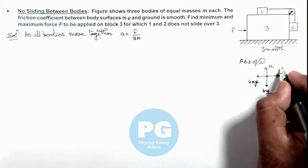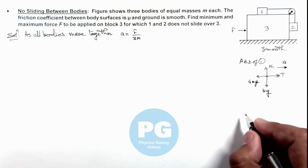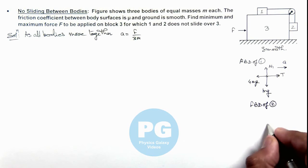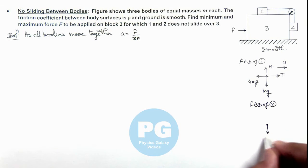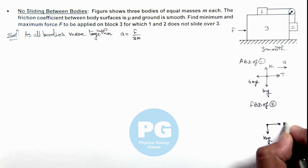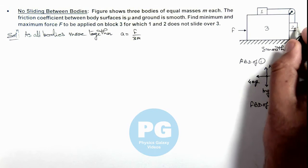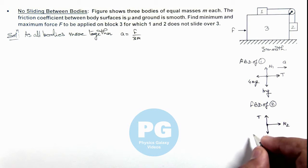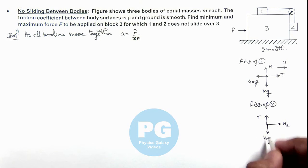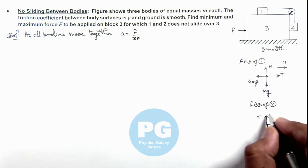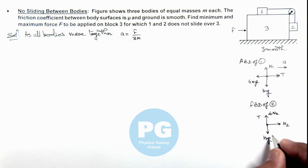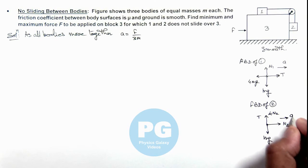Similarly, for the free body diagram of block 2: its weight acts downward and the normal reaction N2 acts toward the right due to block 3, and tension acts in the upward direction. As block 2 has a sliding tendency in the downward direction, friction acts on it in the upward direction. Under the limiting condition, friction equals mu times N2, and block 2 is also moving toward the right with acceleration ay.